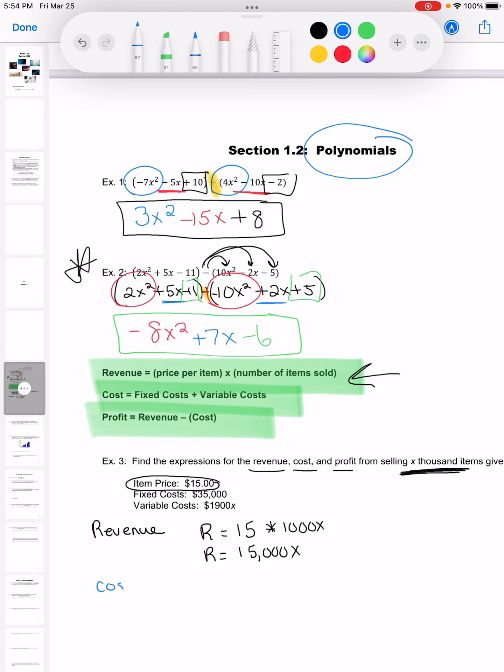Now I'm going to make my cost polynomial, my cost equation. For the cost, it is the fixed cost plus the variable cost. Well, I've told you both of these.